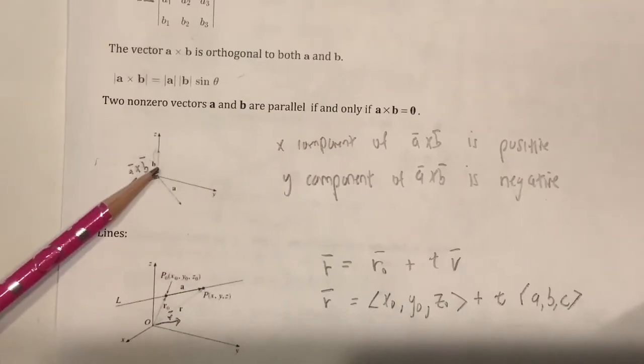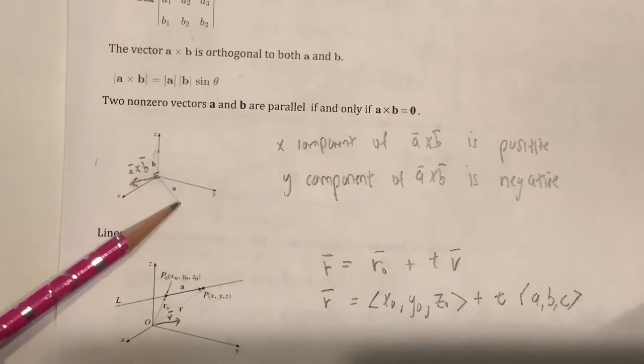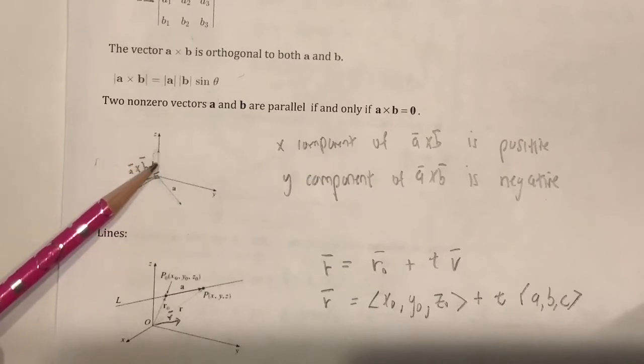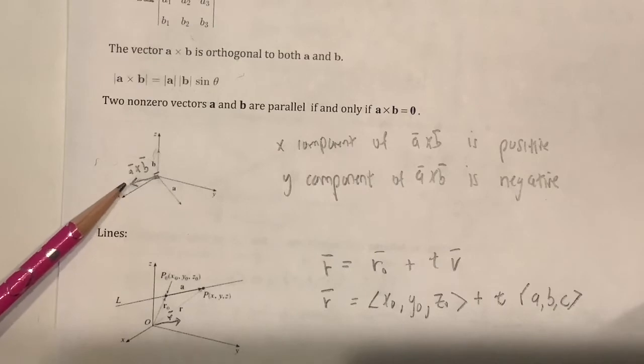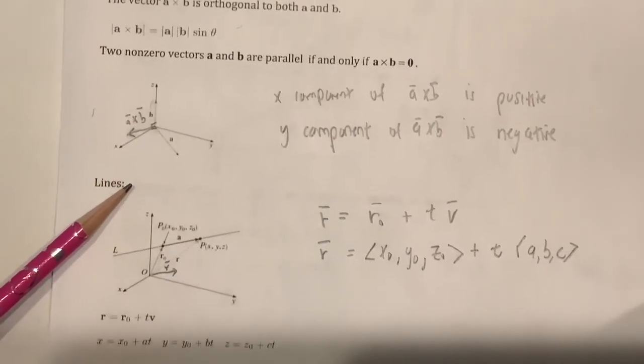Here's an example of a cross product. If vector a is in the xy plane and b is along the z-axis, then a cross b would be pointed this way using the right-hand rule. A cross b is a vector like this. So the x component would be positive and the y component would be negative.